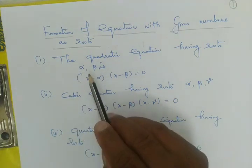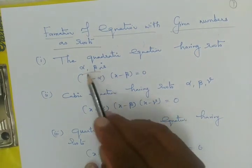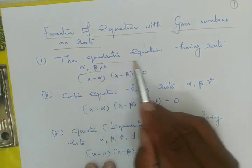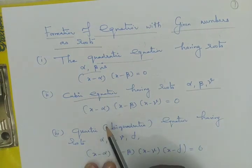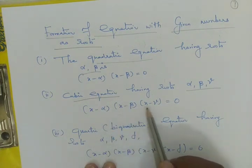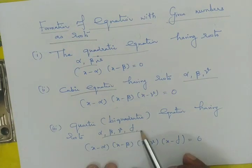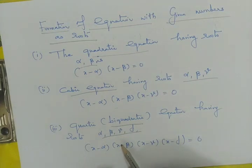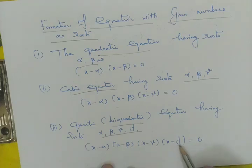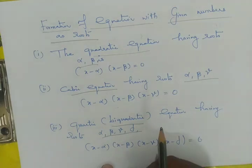If we look at this: 2 roots indicates a quadratic equation, 3 roots indicates a cubic equation, and 4 roots — that equation is called a biquadratic equation. That equation is given by the factors x-alpha, x-beta, x-gamma, and x-delta, and you are going to get the required equation.